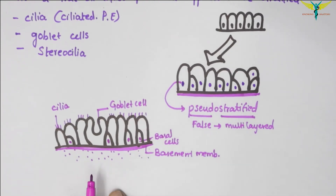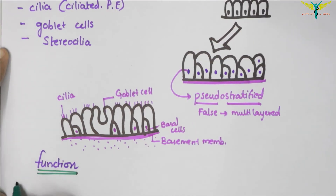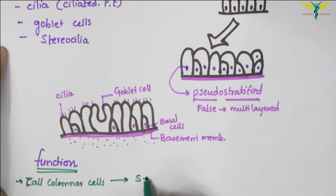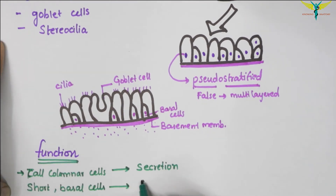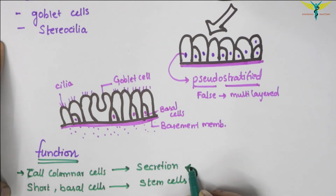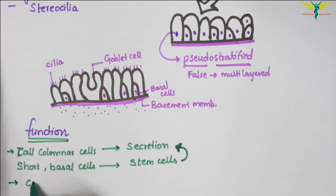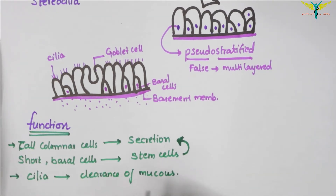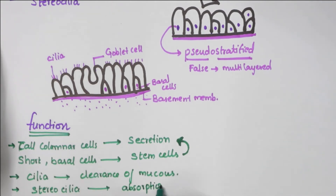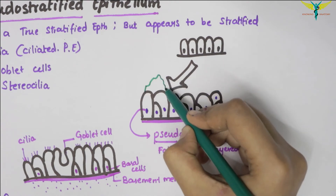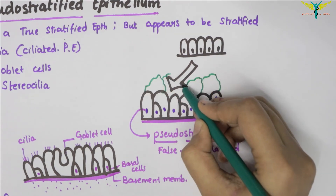The function of the pseudo-stratified epithelium: the tall columnar cells are secretory in nature, while the short basal cells are the stem cells that constantly replace the tall columnar cells. The cilia help in the clearance of mucus, and the stereocilia help in absorption. In surface view, these cells have polygonal outlines.